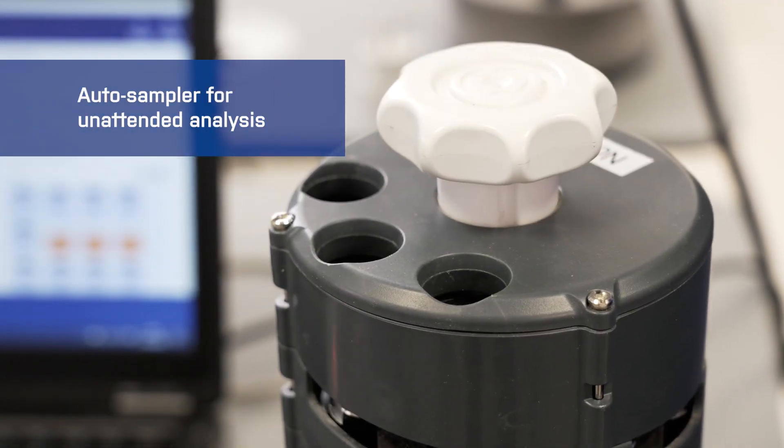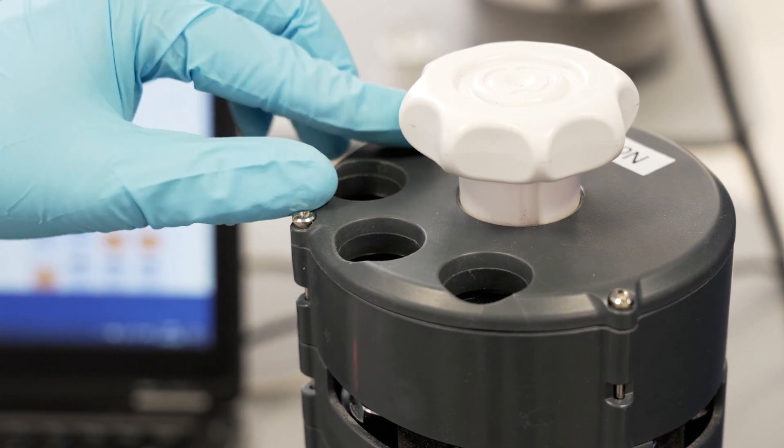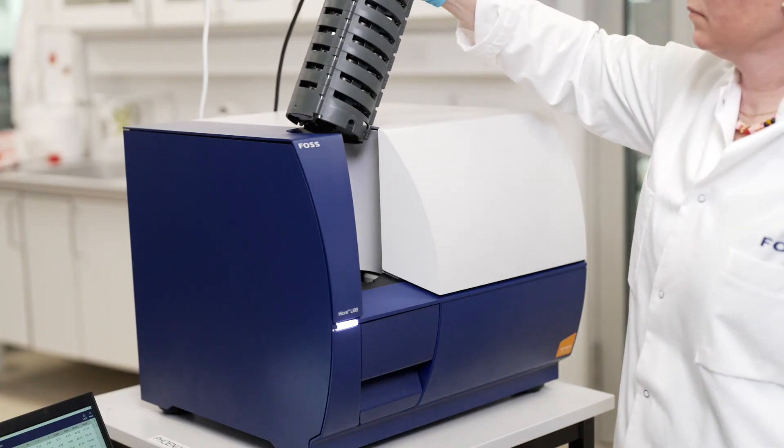60 pellets are placed in the auto sampler cassette and loaded into the micro LIBS, which has a total running time of approximately 60 minutes.